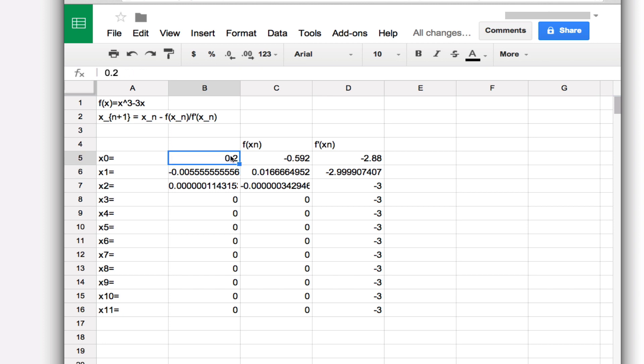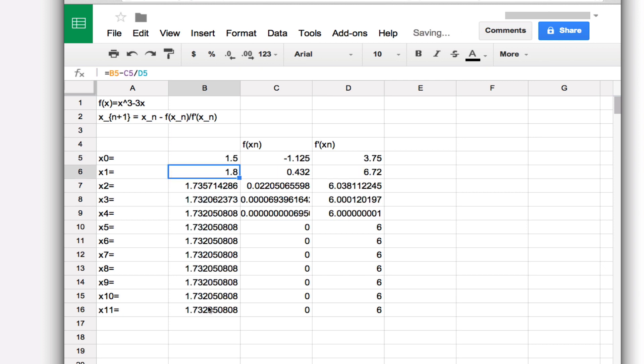You can see this number here—if I square that, it should give me three. So I've converged to the correct decimal expansion for the square root of three.